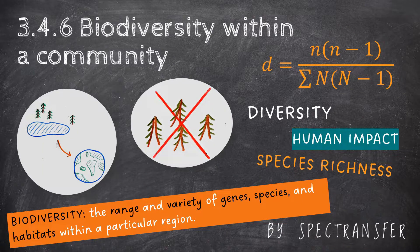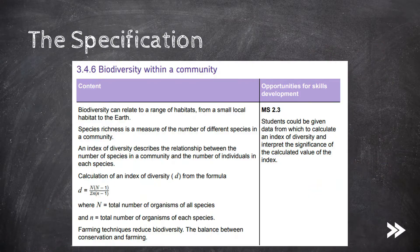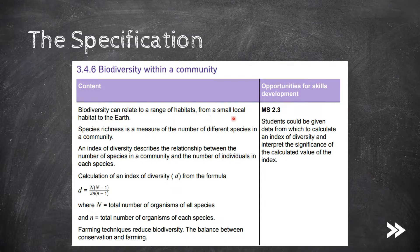Hey guys, welcome to SPECTransfer and to topic 3.4.6, Biodiversity within a community from the AQA A-Level Biology specification. This is a very short and simple topic to cover. First, we should know that biodiversity can relate to a range of habitats, from a small local habitat to the earth, and also be able to define species richness.